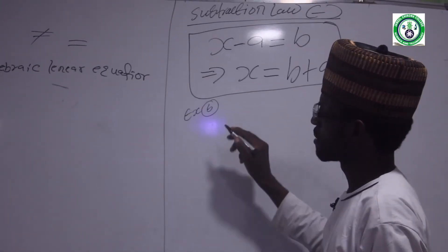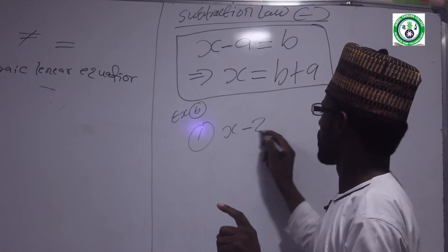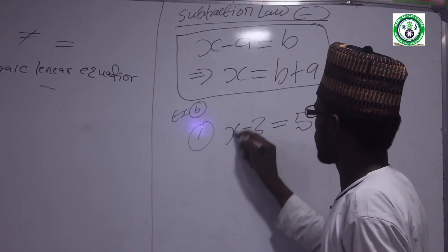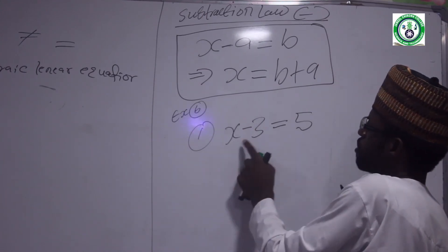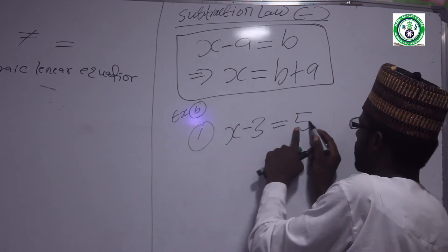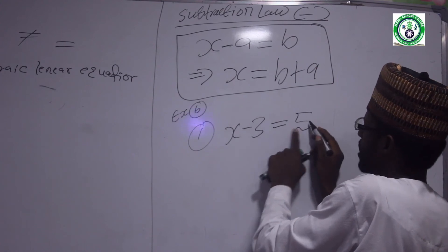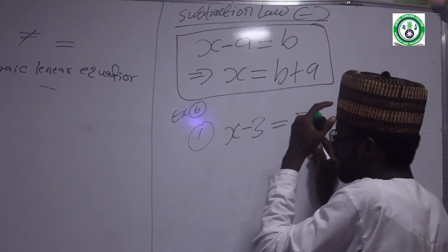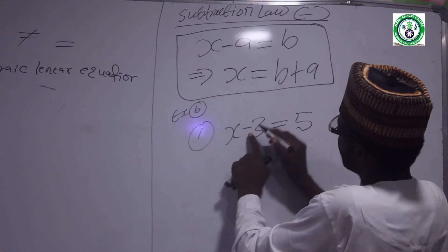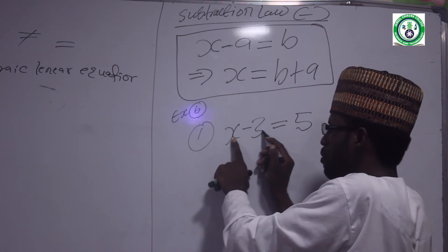Example B, number one: x minus 3 equal to 5. In Hausa: a certain unknown number — when I subtract 3 from it, I get 5. What number, when I subtract 3, gives 5?